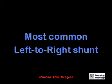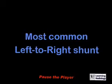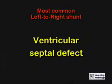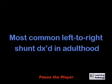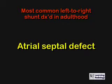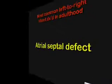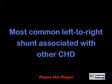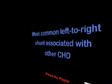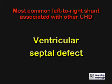What is the most common left to right shunt? A ventricular septal defect. What is the most common left to right shunt diagnosed in adulthood? Atrial septal defect. What is the most common left to right shunt associated with other congenital heart disease? A ventricular septal defect.